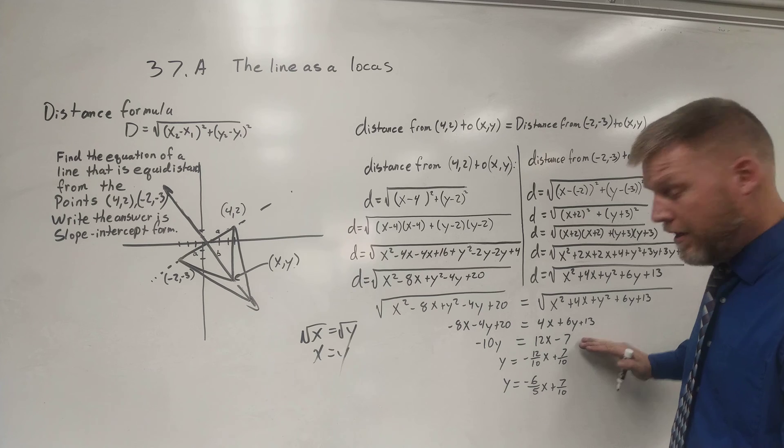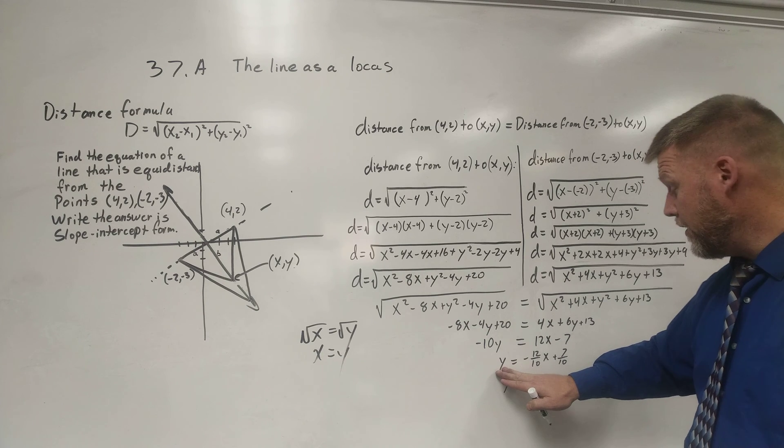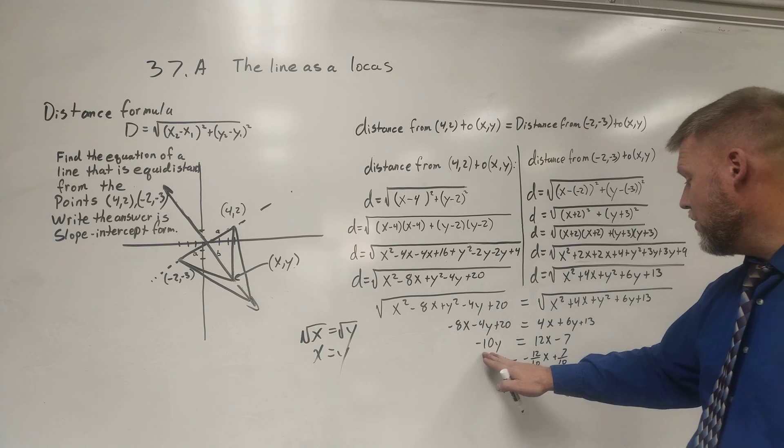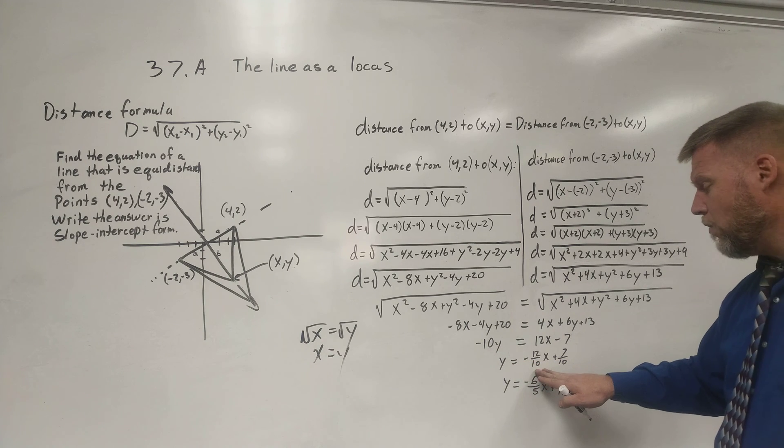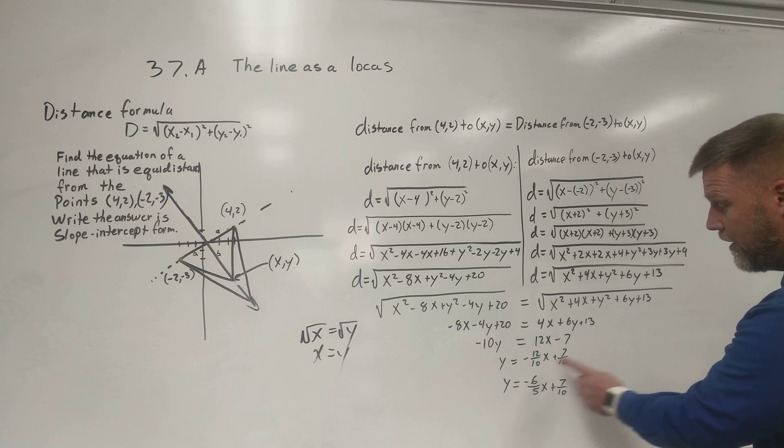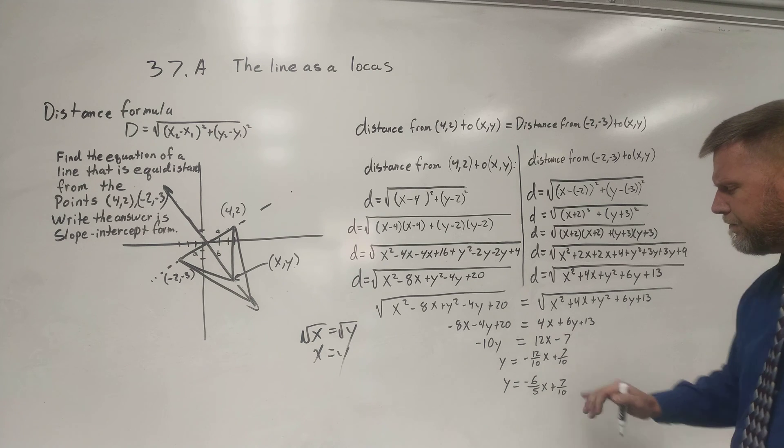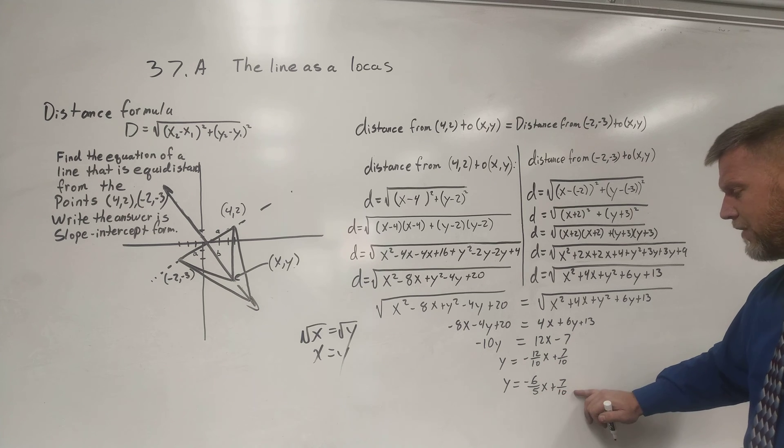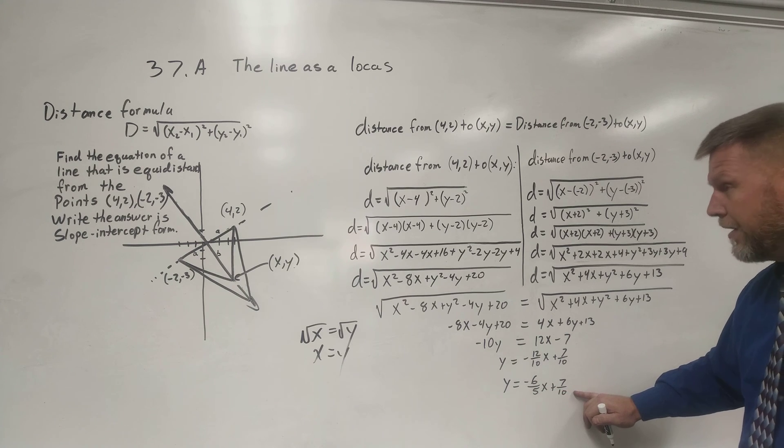I'm almost in y equals format, not quite y-intercept yet. So I'm going to go ahead and divide both sides by negative 10. When I do so, I get negative 12 over 10 and a positive 7 over 10. A negative and a negative. There's a positive. My 12 and 10 reduces to 6 and 5. My 7 and 10 stay the same.